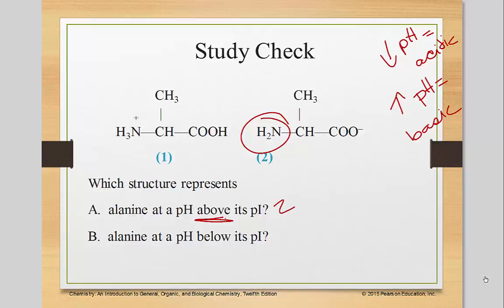Alanine at a pH below means it's acidic, which means that there's extra hydrogens floating around, which means that it can absorb it. Which means the answer here is 1.